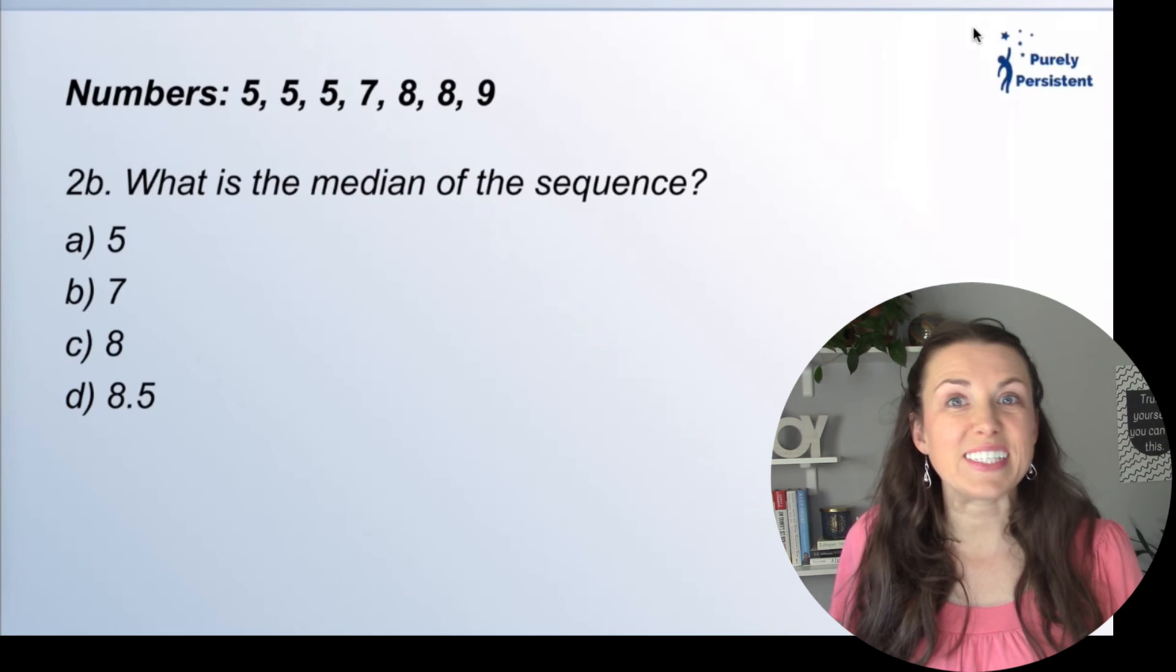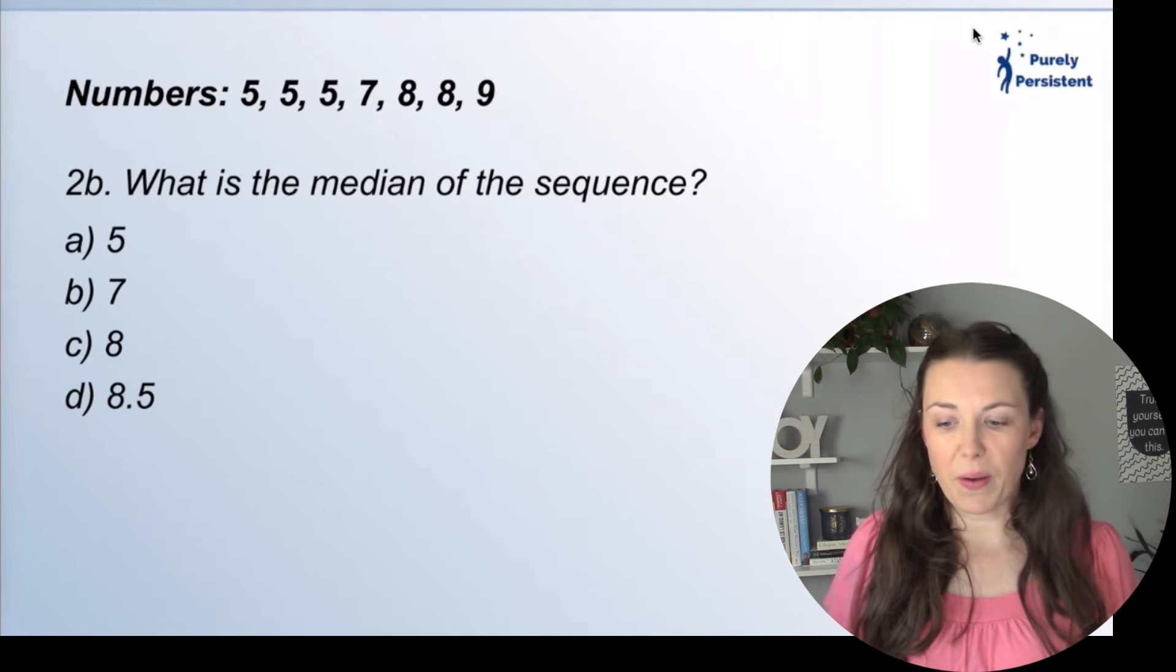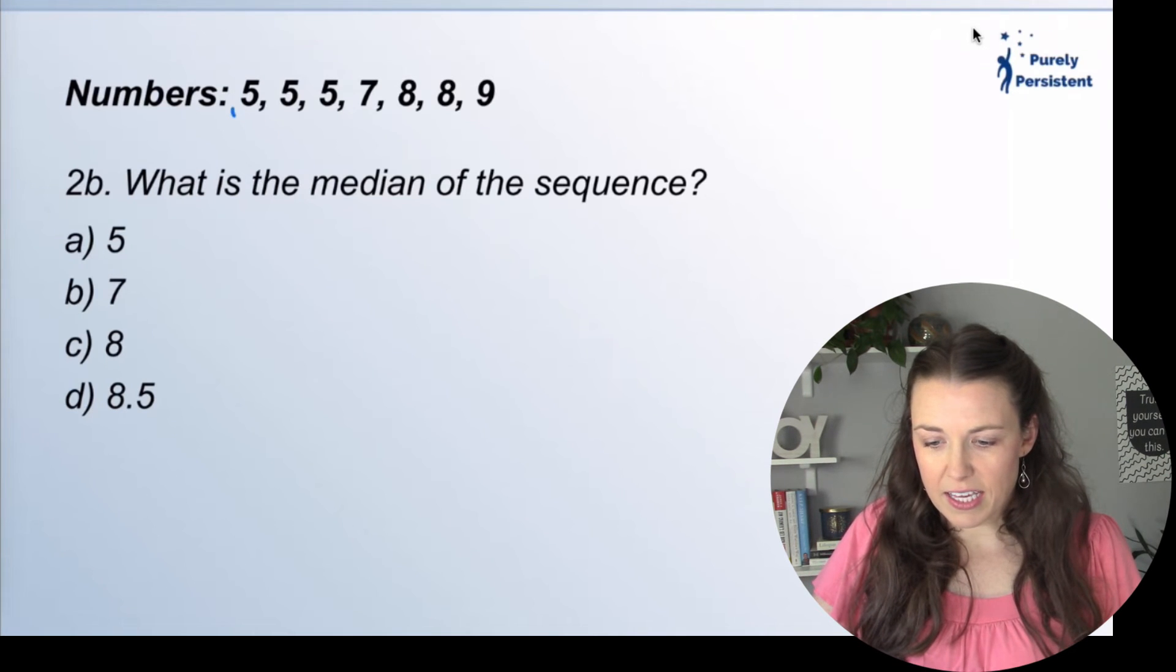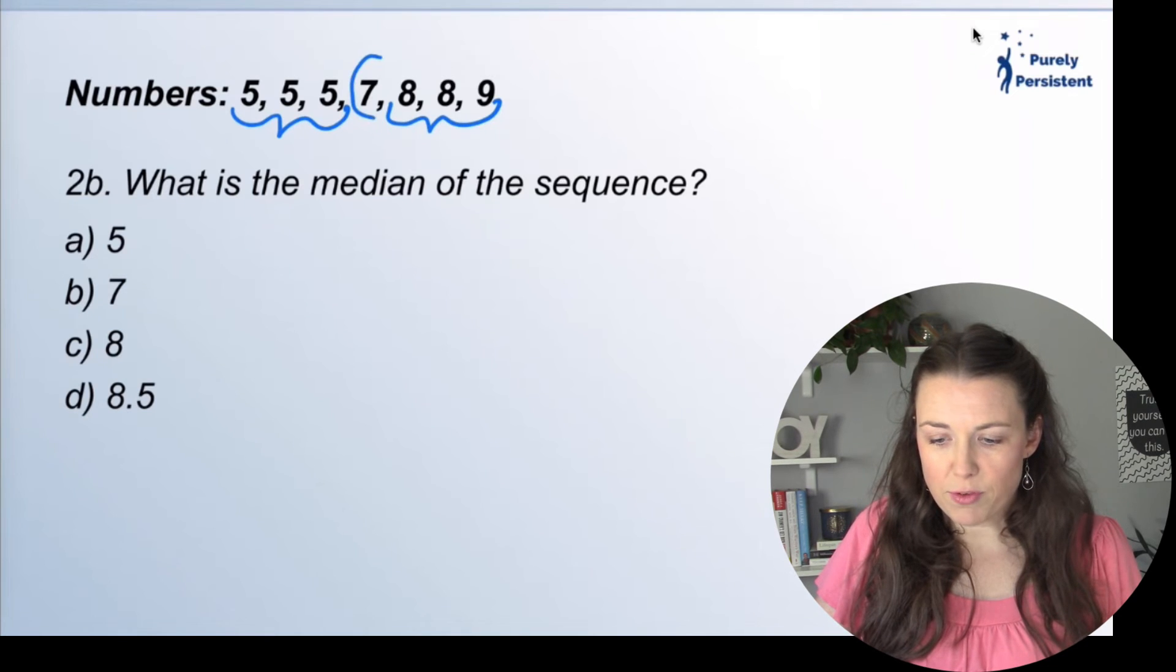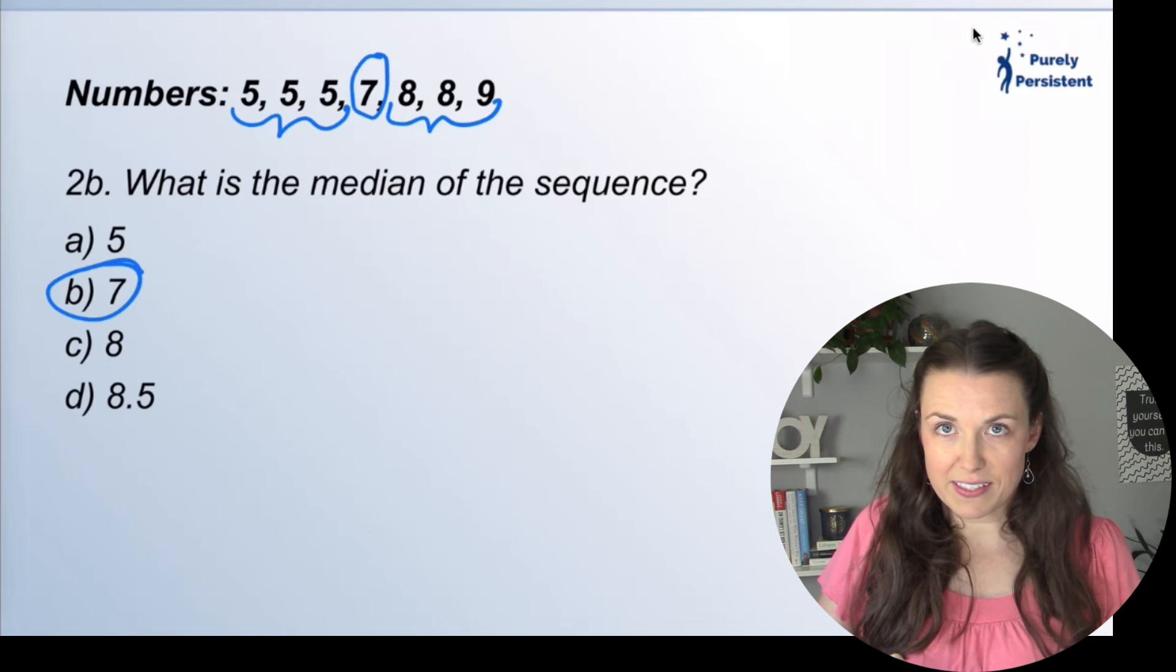What is the median of the sequence? Again, line the numbers up in a row, and we're looking for that middle number. So I'm going to take, here we have three over here, the three smallest, the three largest, and I'm left with that middle one, which is seven. And that's my answer.